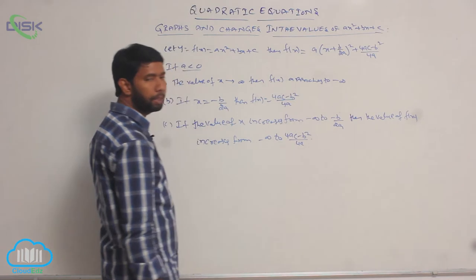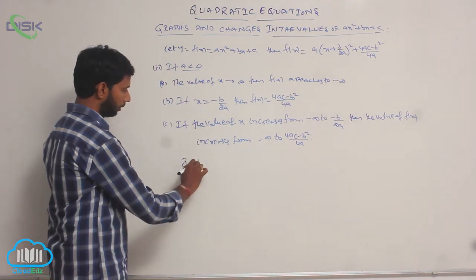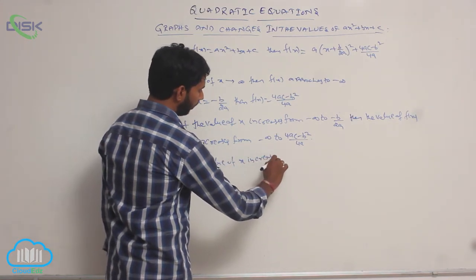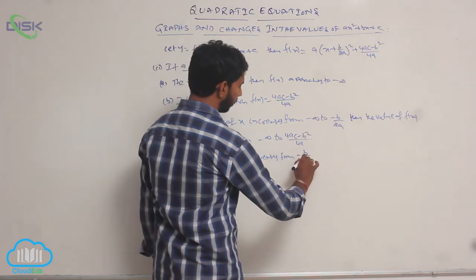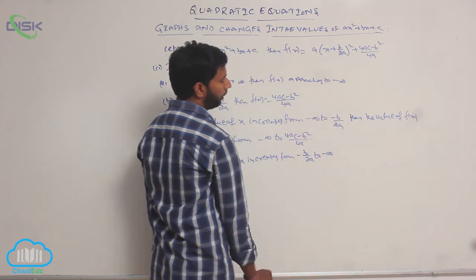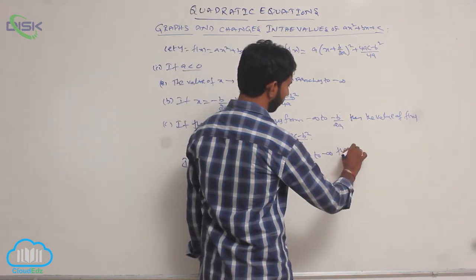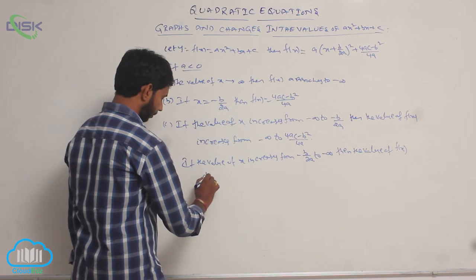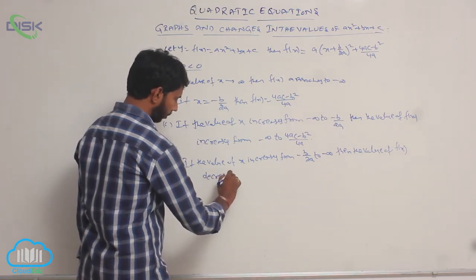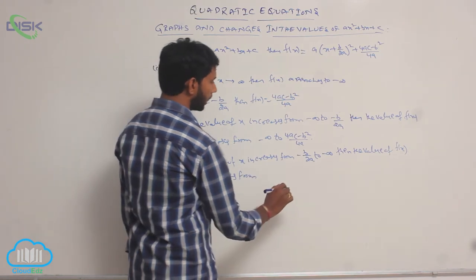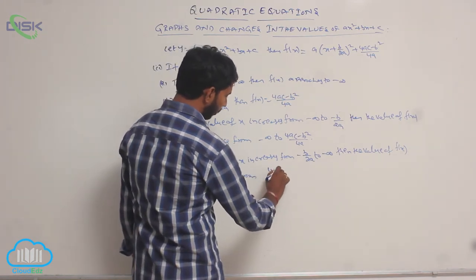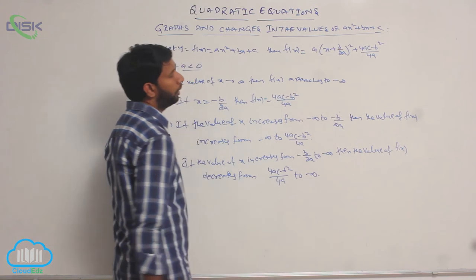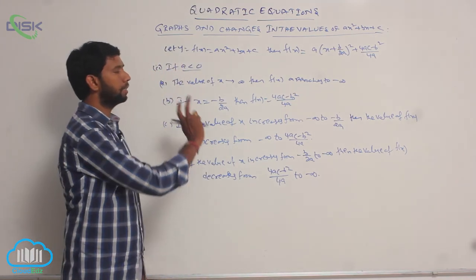If the value of x increases from minus b by 2a to plus infinity, then the value of f of x decreases from 4ac minus b squared by 4a to minus infinity, when a is less than 0.